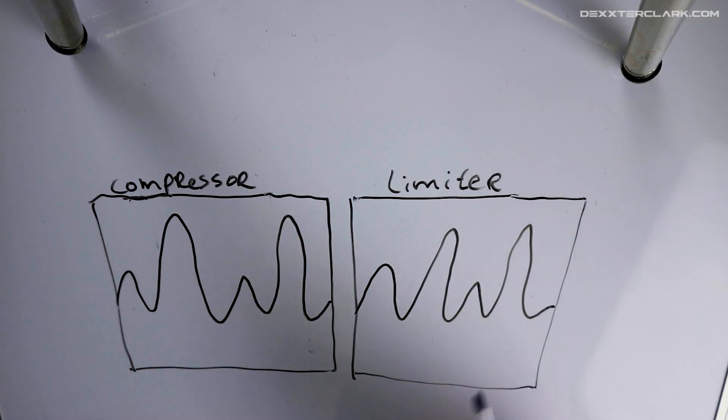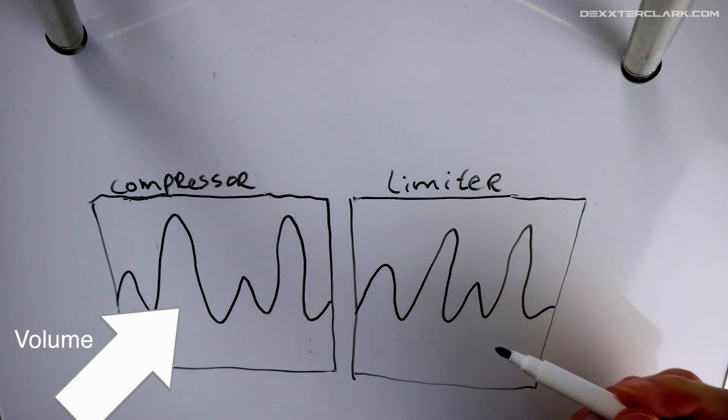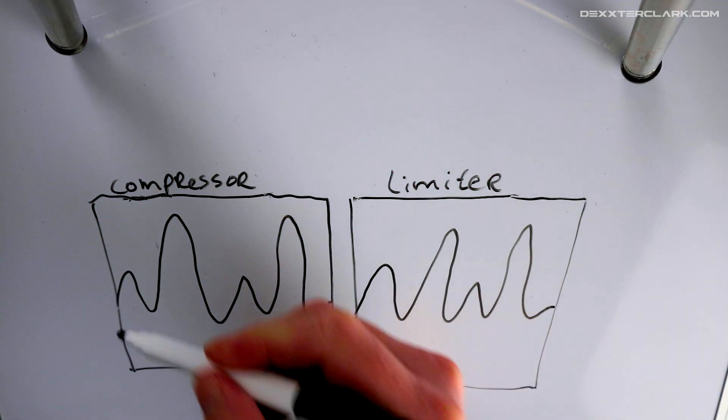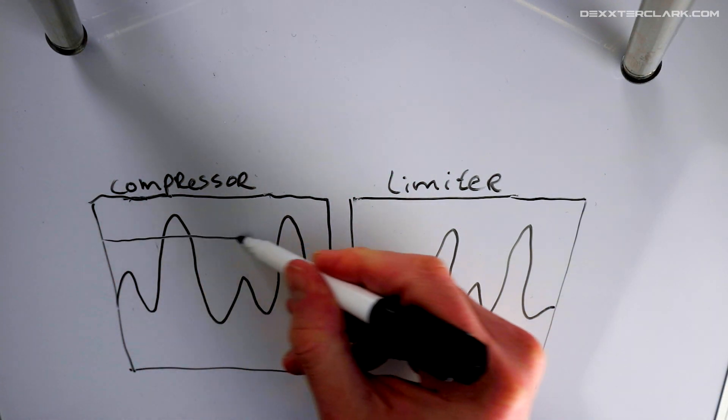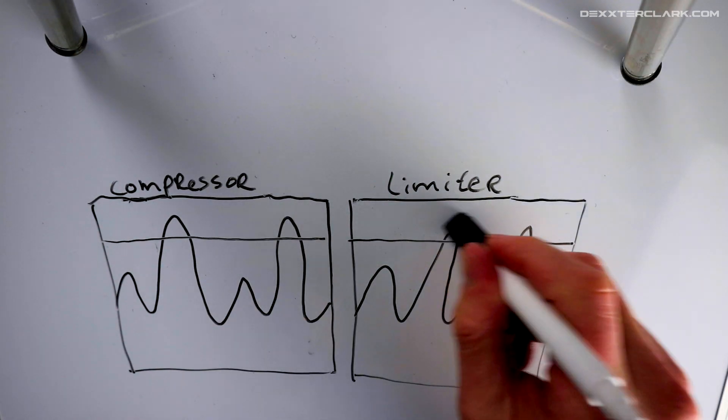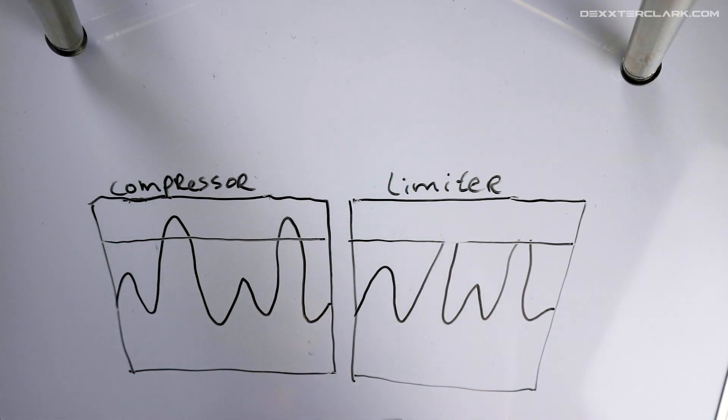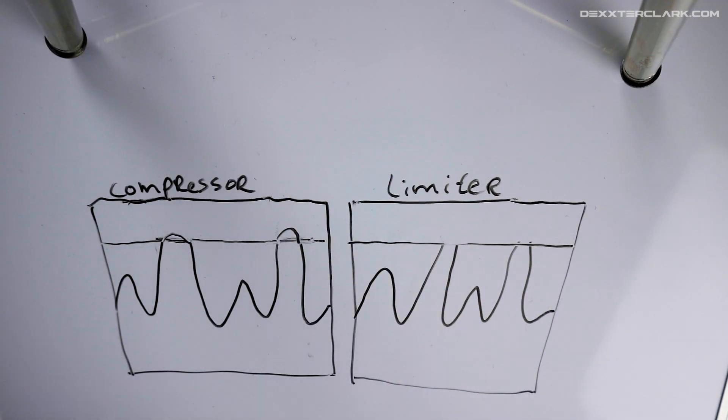When this is a compressor and this is a limiter, we can set a threshold. And if this is the threshold, then a limiter would do this and a compressor would do this. So the difference is this part.